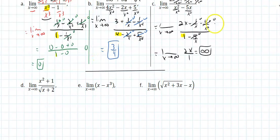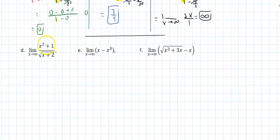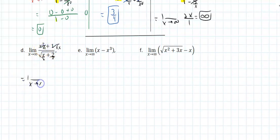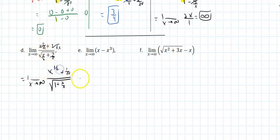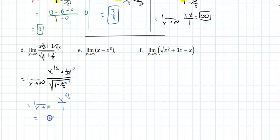For the second case, I divide by the highest power term of the denominator — in this case, x under a radical, which is really x to the 1/2. That gives the square root of 1 plus 2 over x in the numerator. The term 1 over radical x approaches 0, and x over x to the 1/2 is x to the 3/2. As x approaches infinity, I'm left with x to the 3/2 over 1, which is infinity.